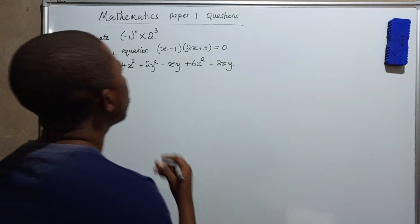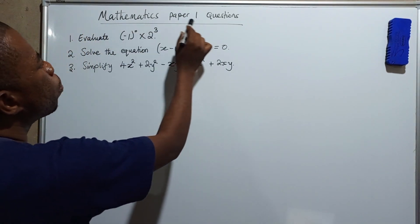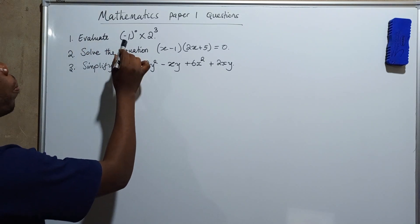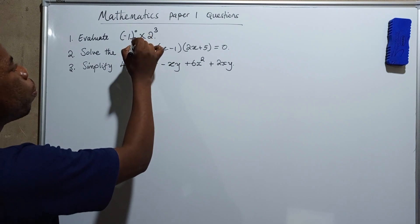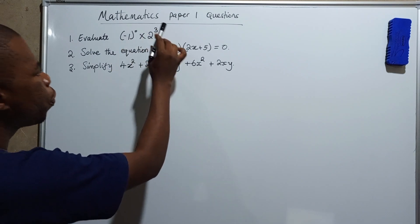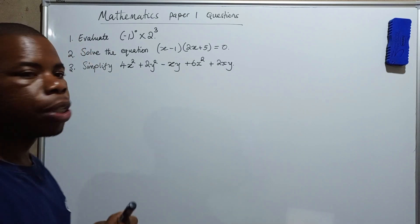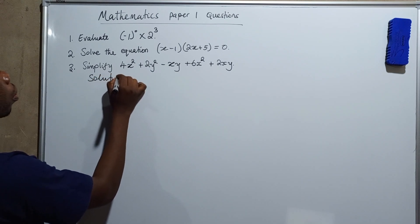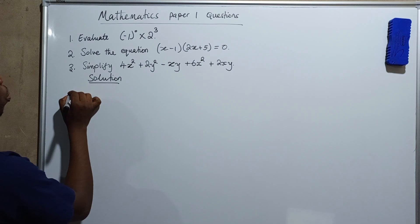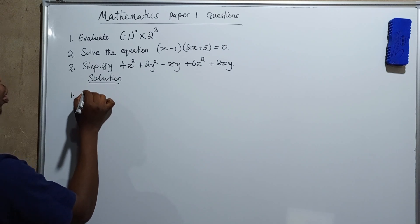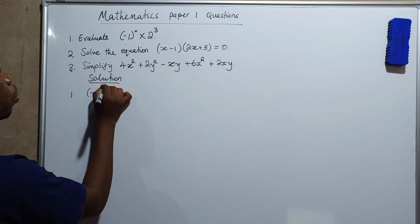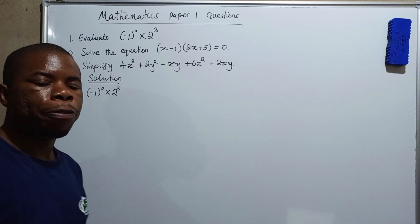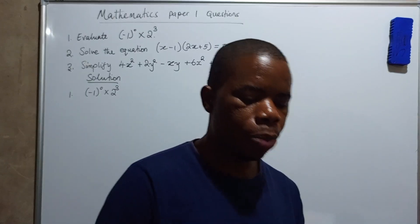So we have a Mathematics Paper One question. Number one says: evaluate open brackets negative one-two close brackets to the power zero, times two to the power three. Let's go straight into the solution. We are told to evaluate open brackets negative one to the power zero, times two to the power three.